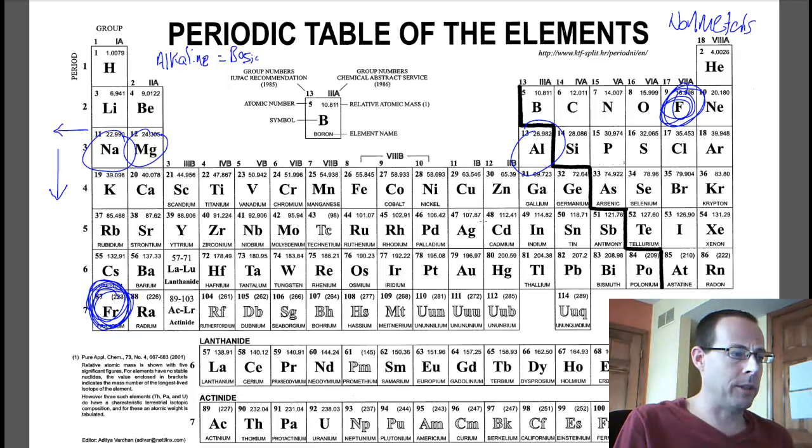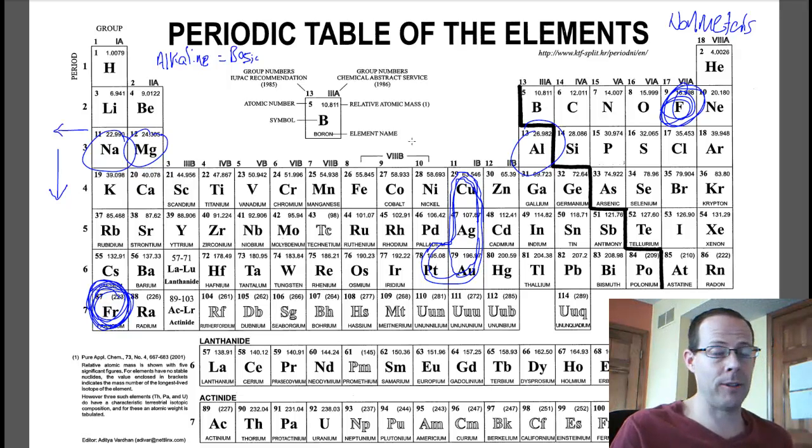And if you look kind of here in the middle, actually make like a backwards L. These metals, copper, silver, gold, and platinum, are probably the most non-reactive metals, are the most non-reactive things in the periodic table.